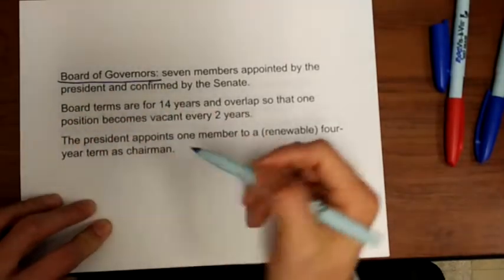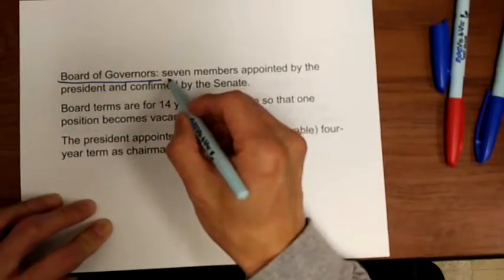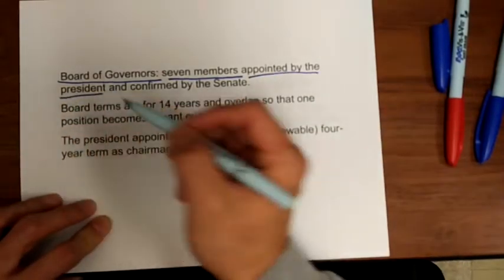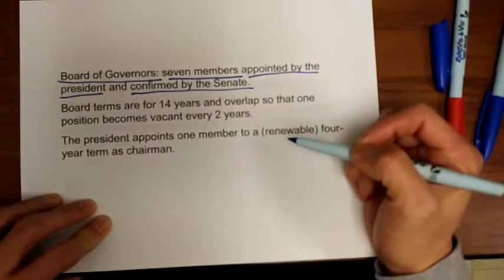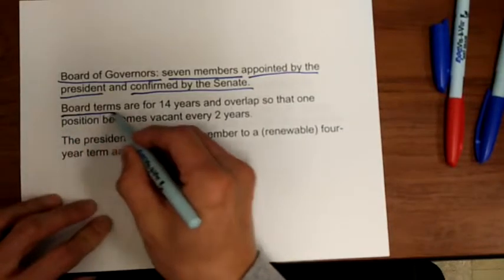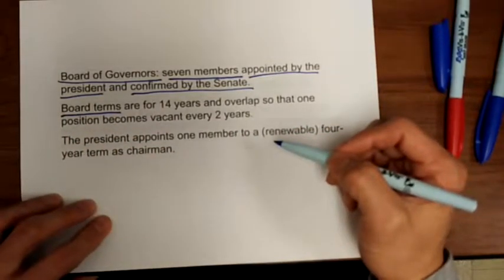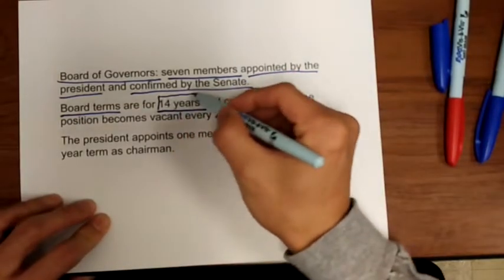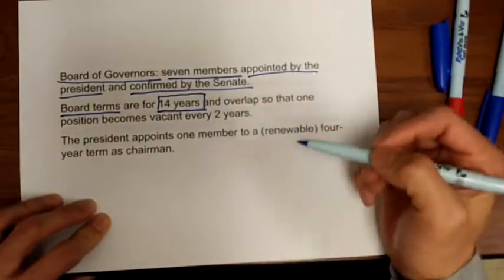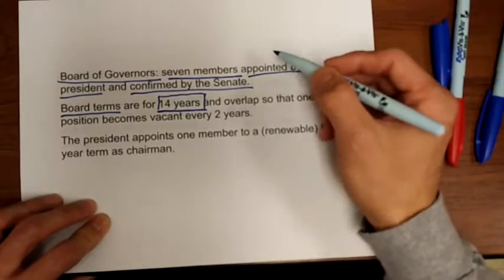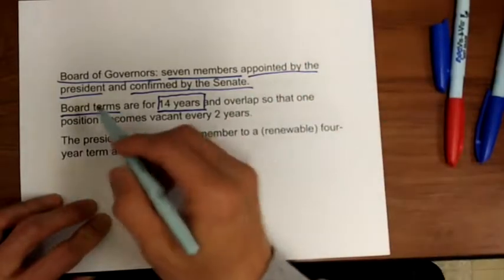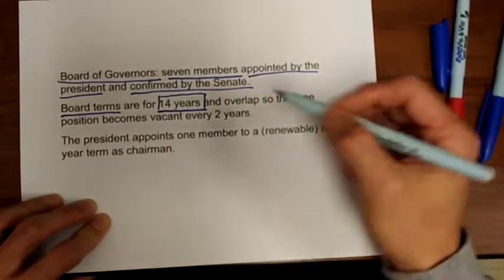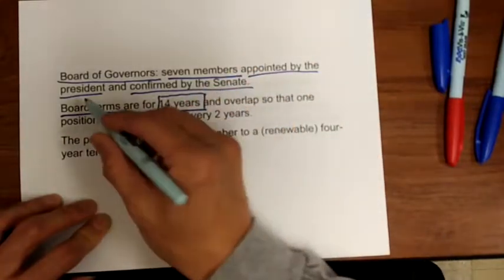The Board of Governors has seven members. They are appointed by the President of the United States and confirmed by the Senate. The tenure for the Board of Governors is 14 years — very long, longer than the President, who can only serve at most eight years. So by theory, each board member lasts longer than the President, so that the government cannot influence the central bank.